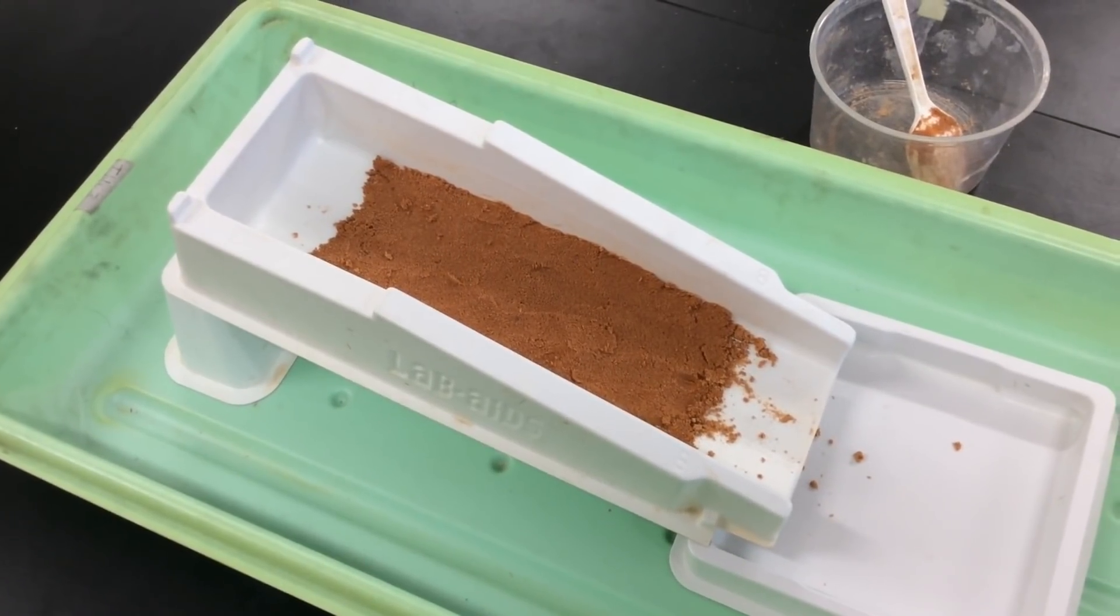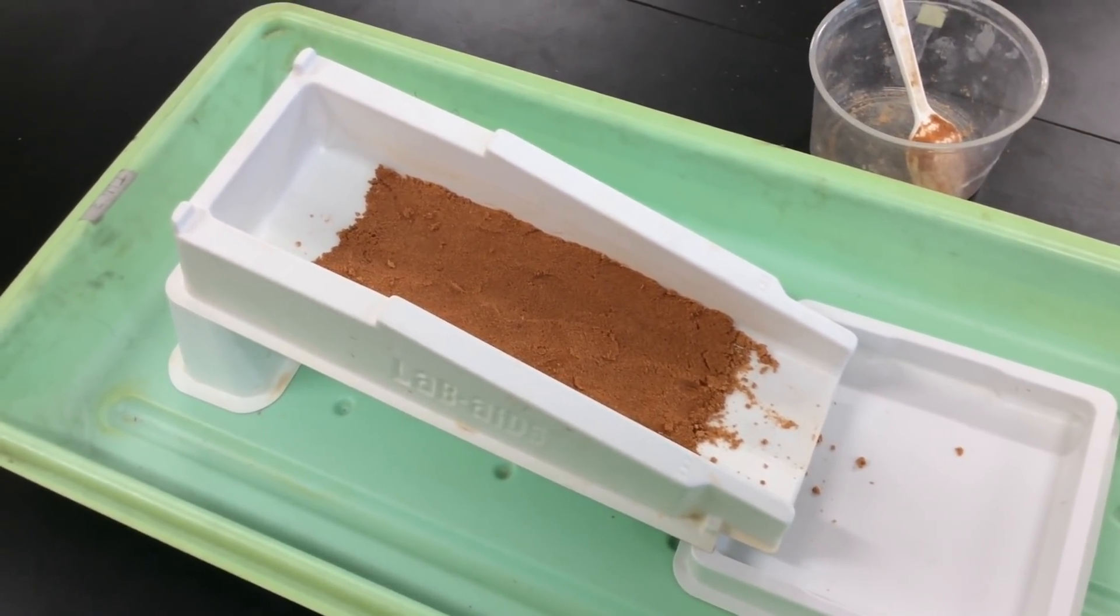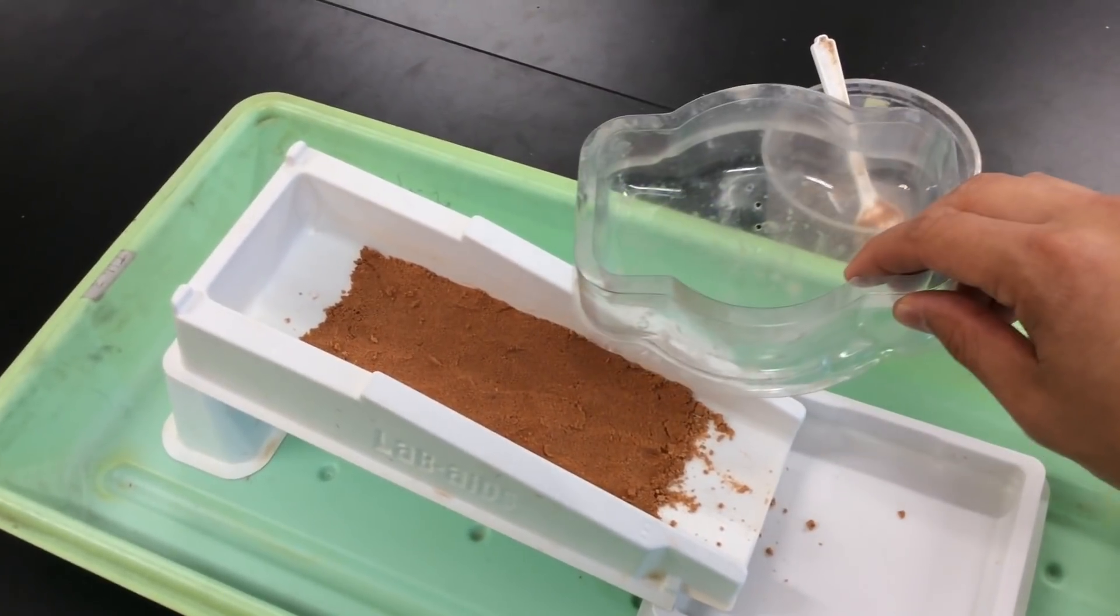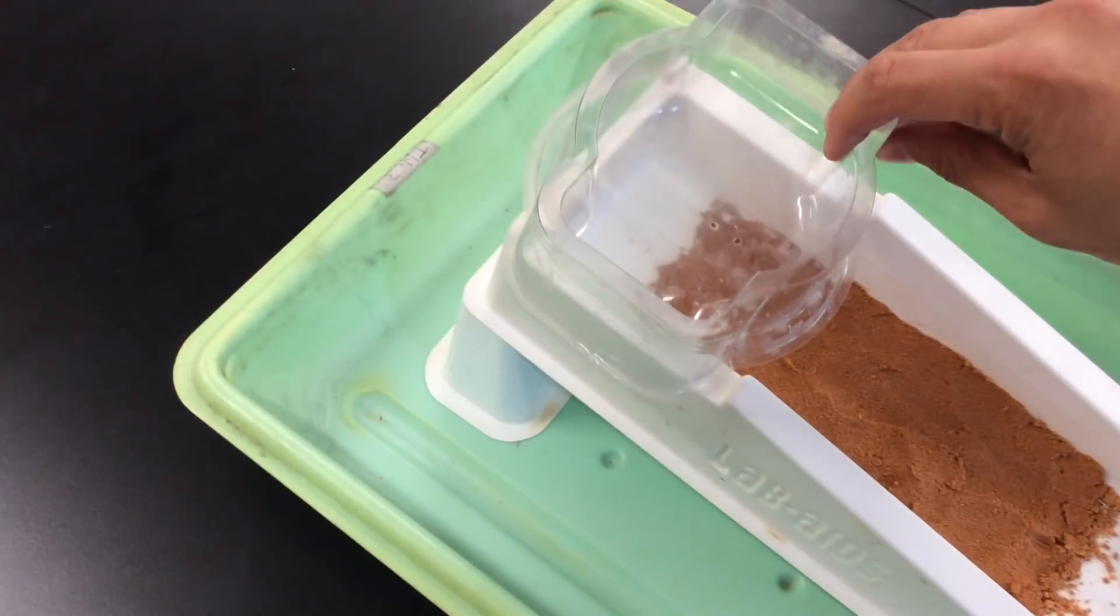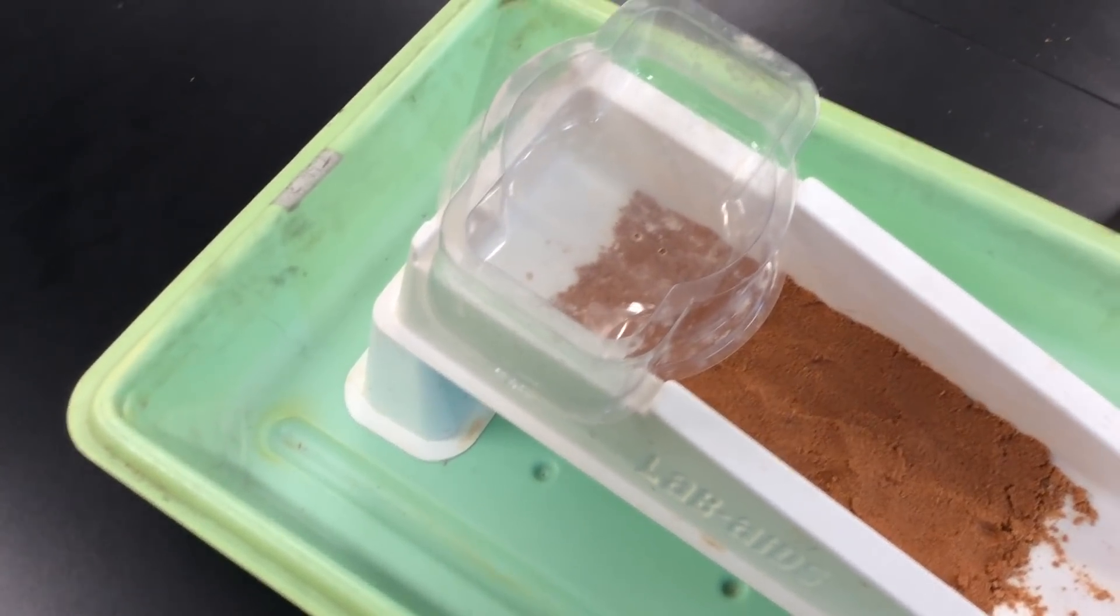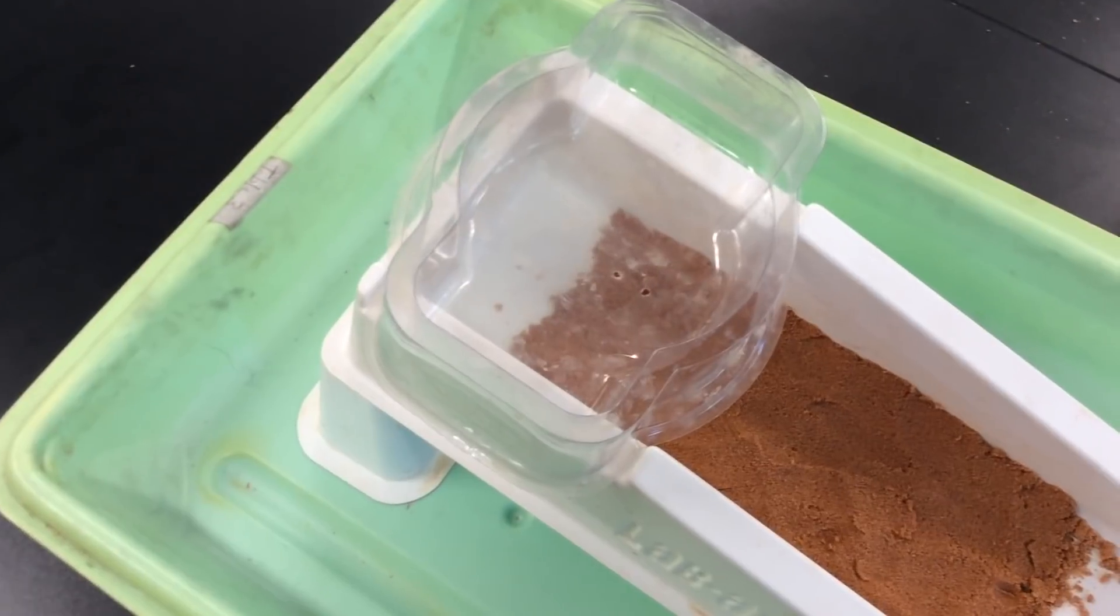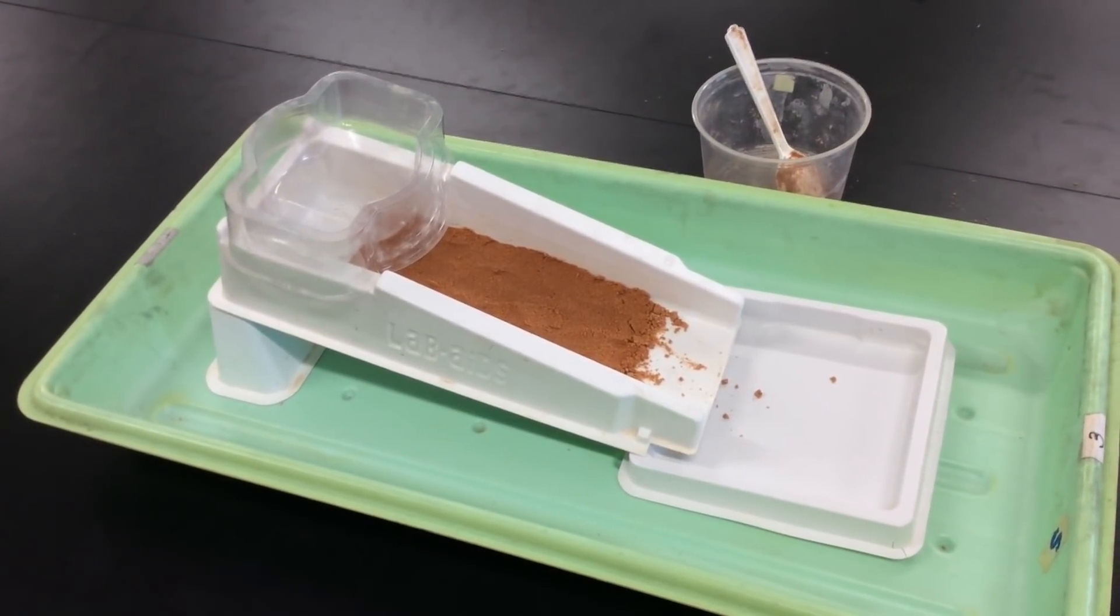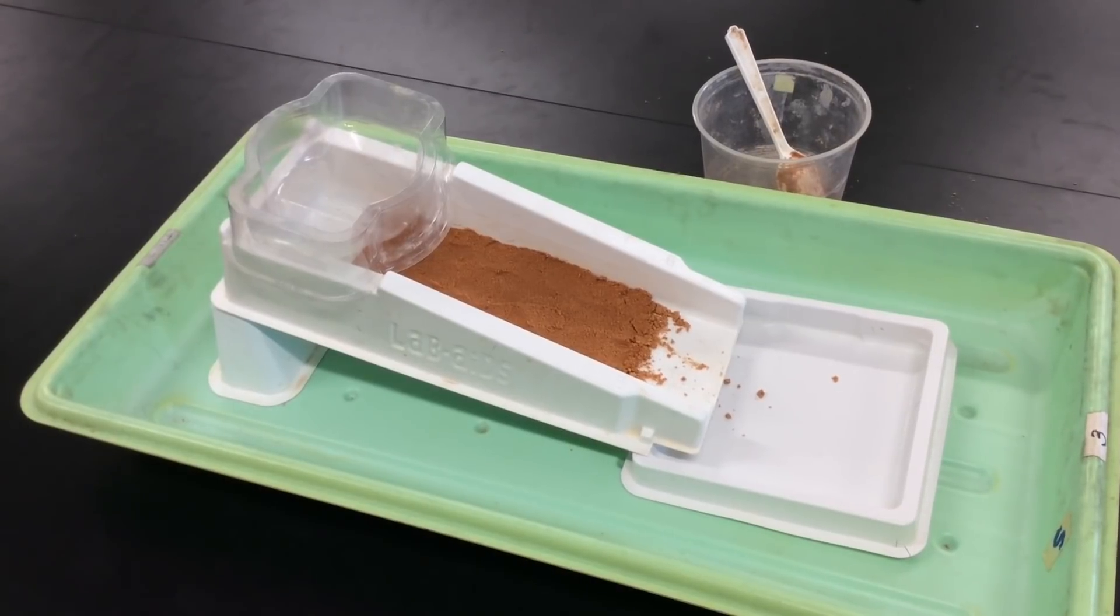So once you have your sand evenly spread out on your river model between points A and points B, you can take your rainmaker and put it over point A. You just want to make sure that the rainmaker is securely on there. So this is a shot of what your river model should look like when you're ready to start your experiment.